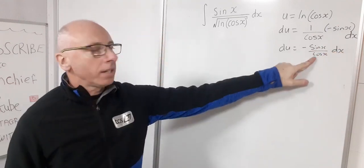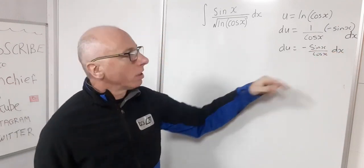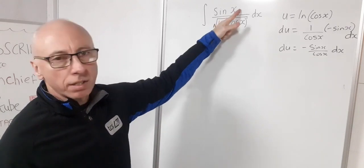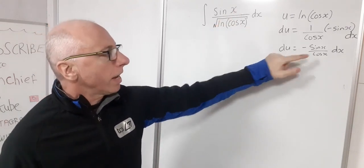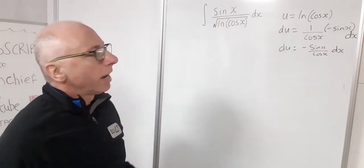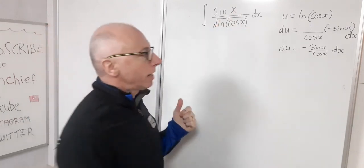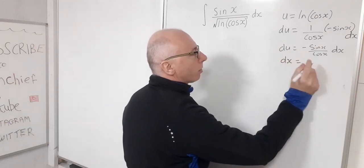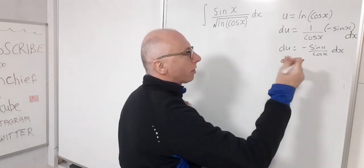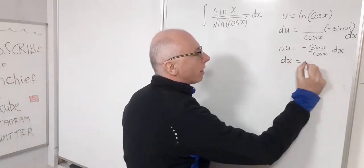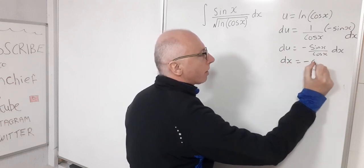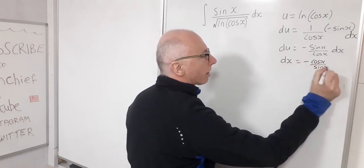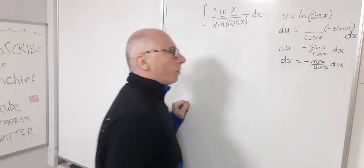This expression is actually tangent, but I'll leave it as is because I want the sine terms to cancel. Now I'll isolate dx: flipping it over gives dx equals minus cosine of x over sine of x, du.